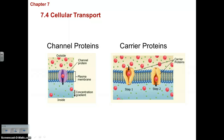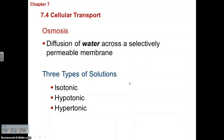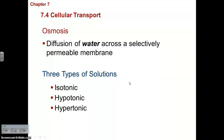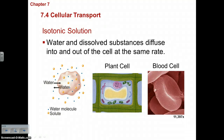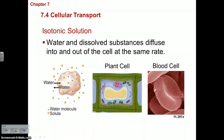The last type of passive transport is osmosis, which is specifically the diffusion of water across the selectively permeable membrane. There are three osmotic conditions: isotonic, hypotonic, and hypertonic. In an isotonic solution, there are equal amounts of water inside and outside the cell, so water moves in and out at the same rate. The cell won't shrink or expand — it's in a comfortable, happy state.